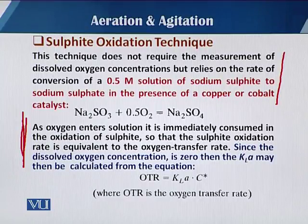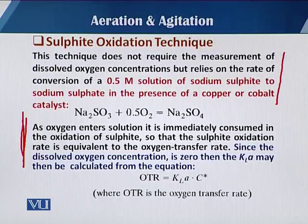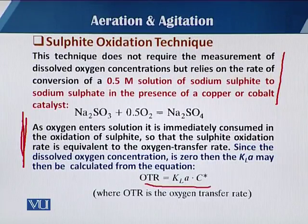When oxygen enters the solution it is immediately consumed by the oxidation of the sulfite, so the sulfite oxidation rate is equivalent to the oxygen transfer rate. Since the dissolved oxygen concentration is zero, the KLA may be calculated from OTR = KLA × C*, where C* is the saturation concentration. These techniques are used to calculate the KLA.